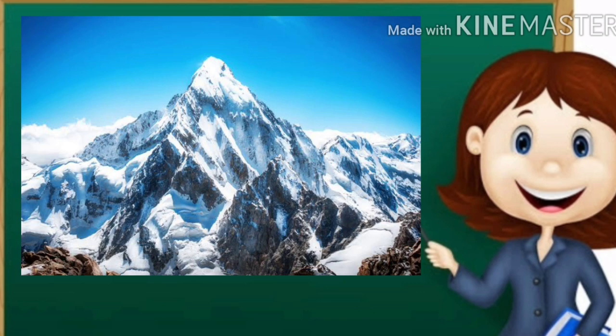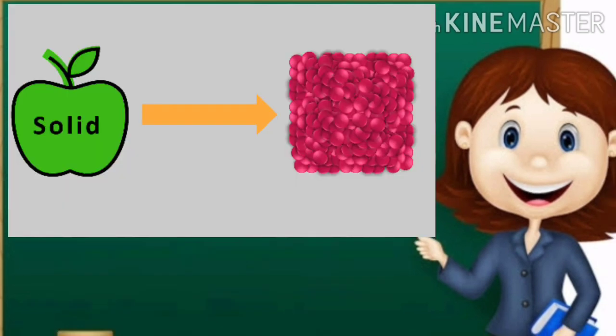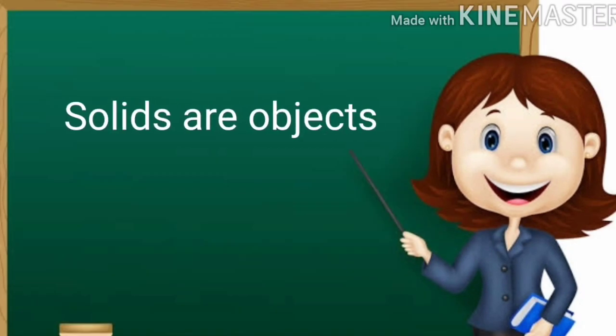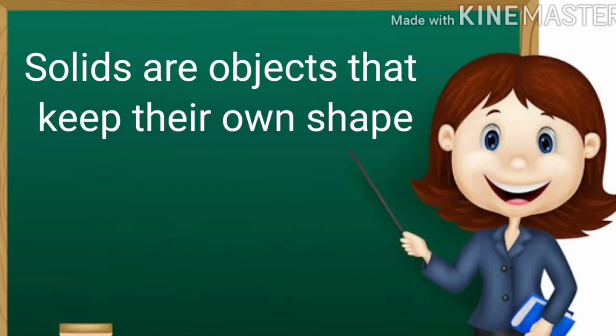Solid is rigid. It has fixed shape and fixed volume. Isn't it? Very good children. Solids are things that have a definite shape and volume. They occupy a fixed space.